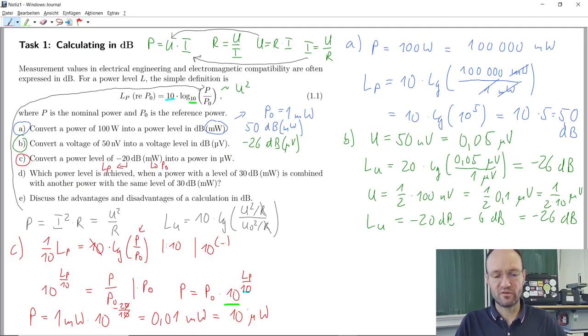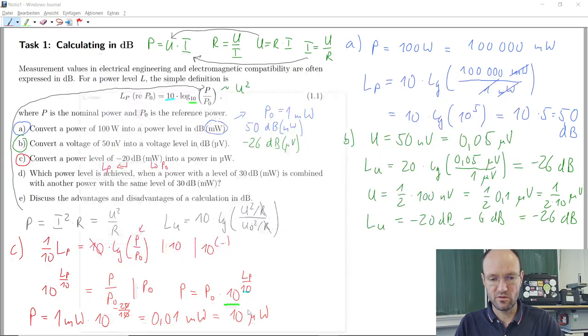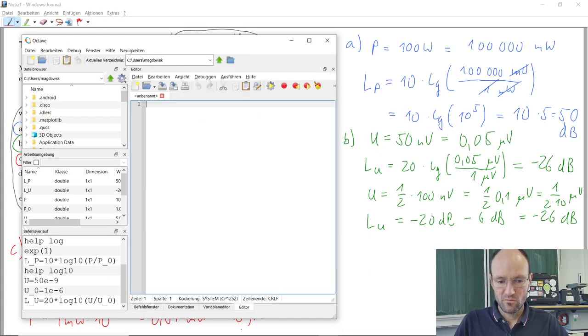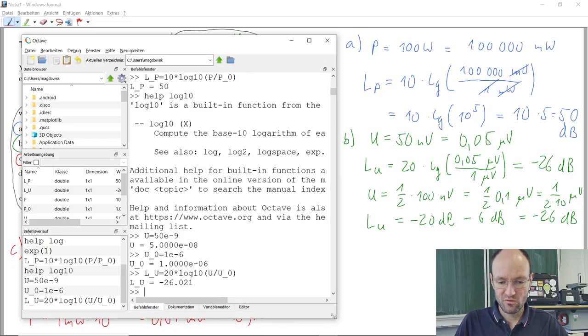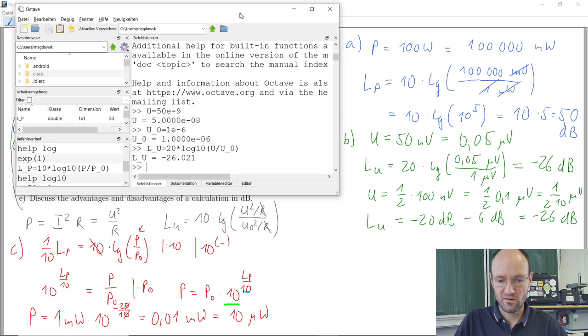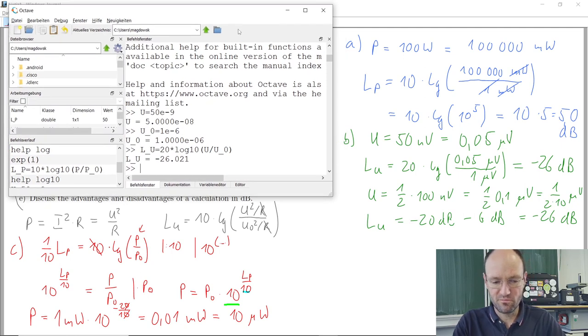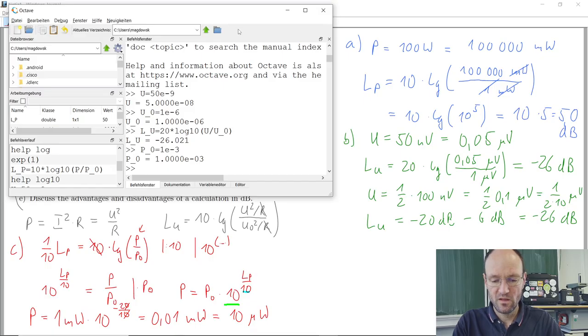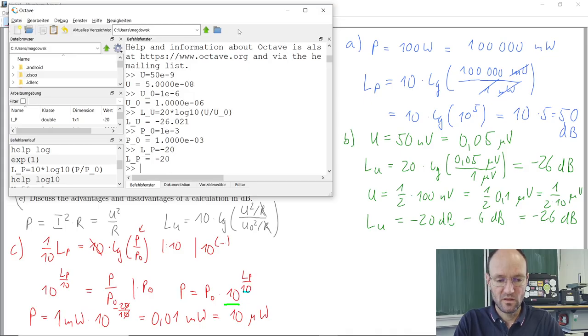And of course, you could also do the very same calculation or some similar calculation in Octave. So my mouse already went to sleep, but I could wake it up. So let's check the reference power here. In this case is, once again, 1 milliwatt. I think this is what we had before. And our power level is minus 20.